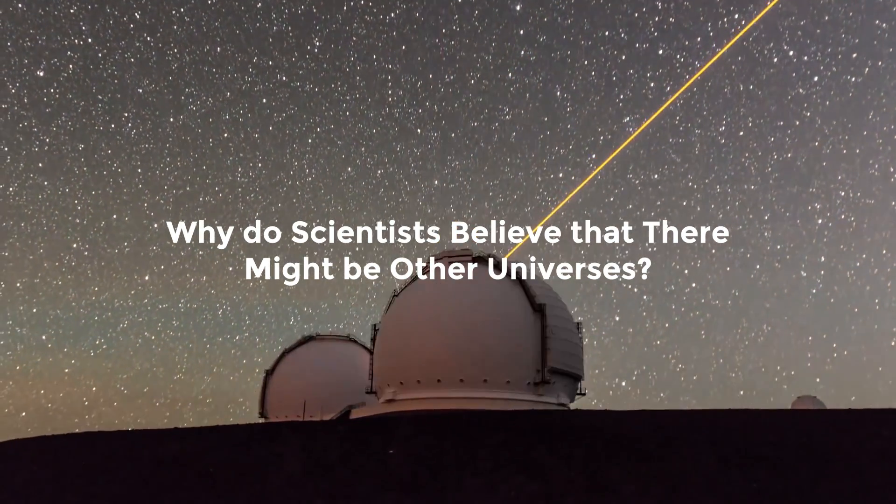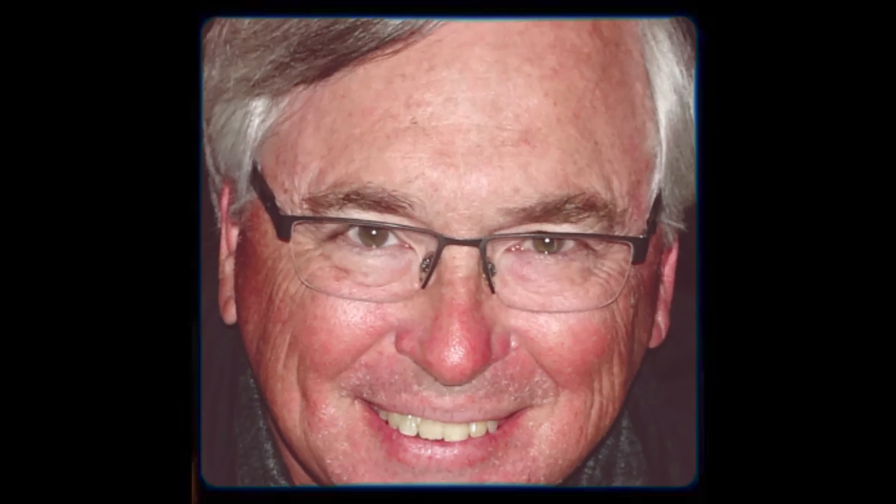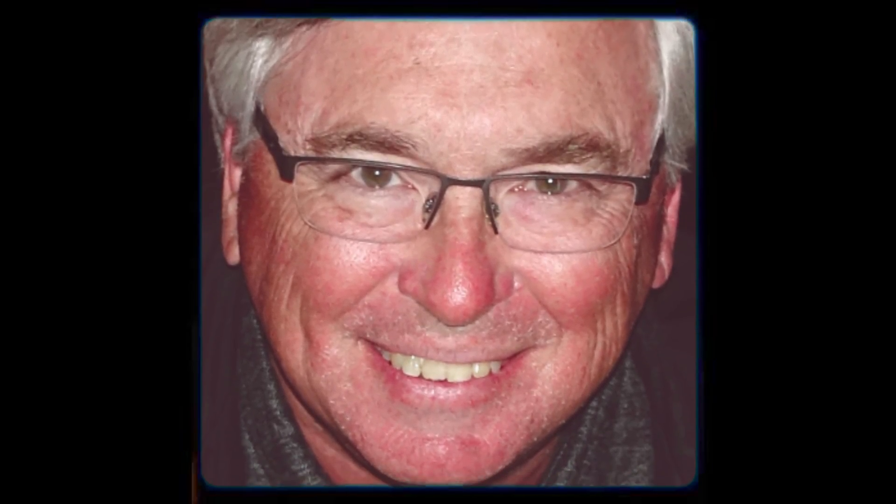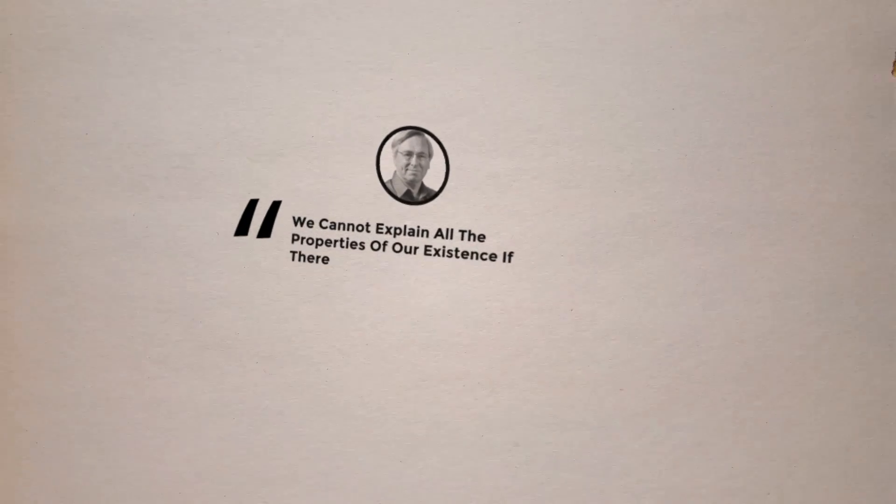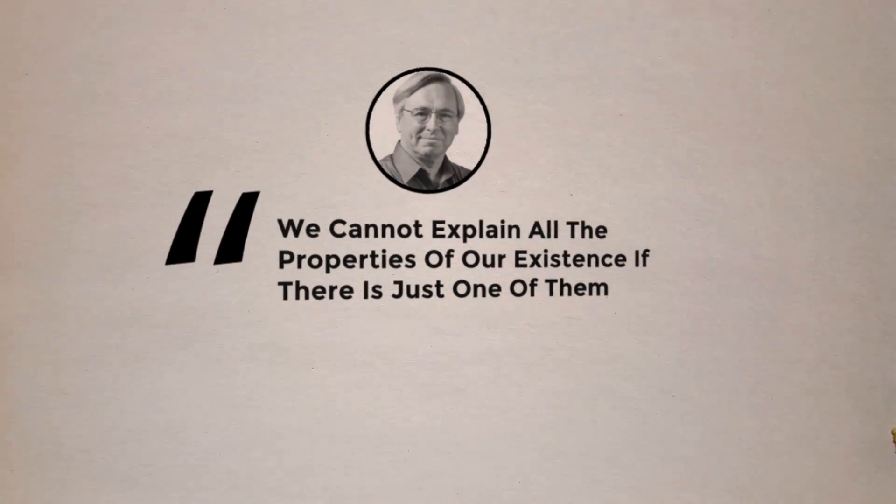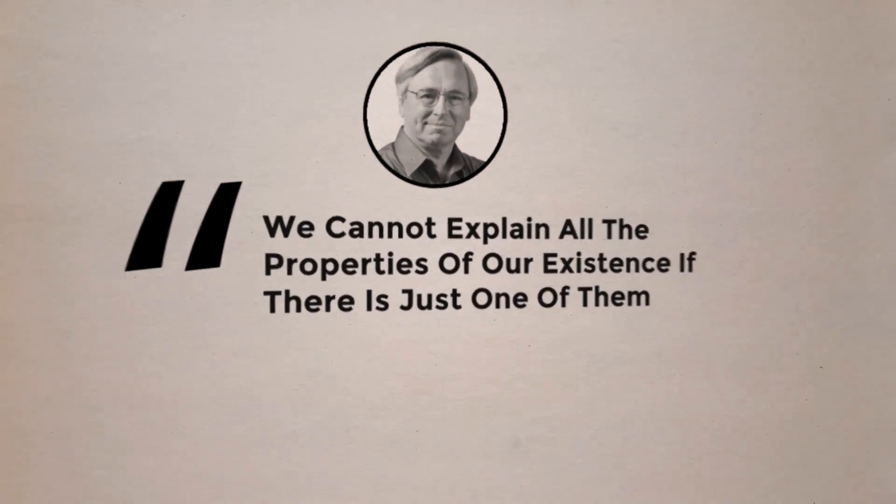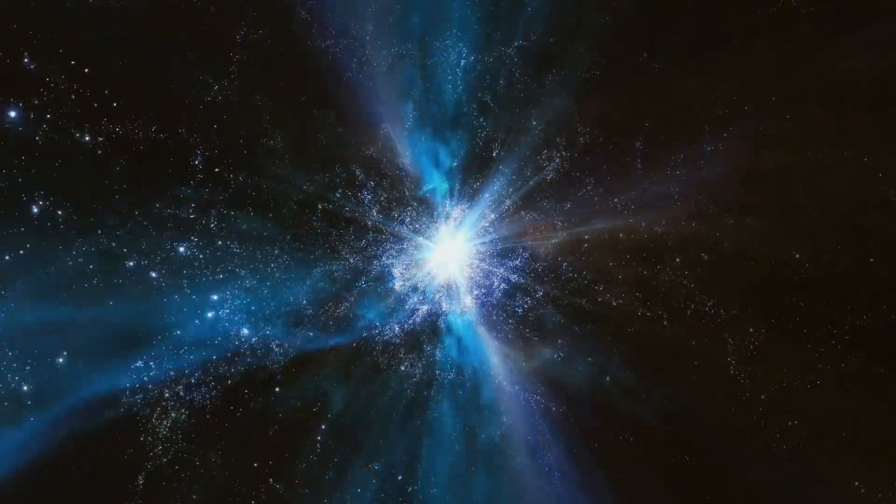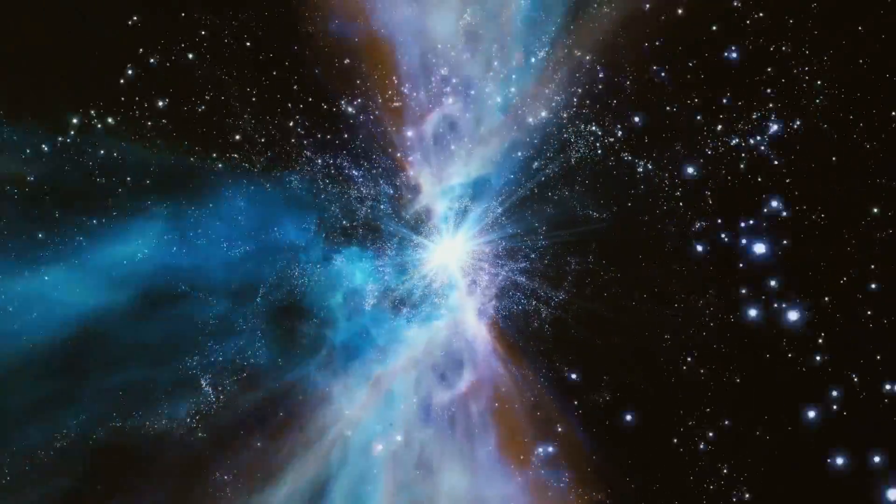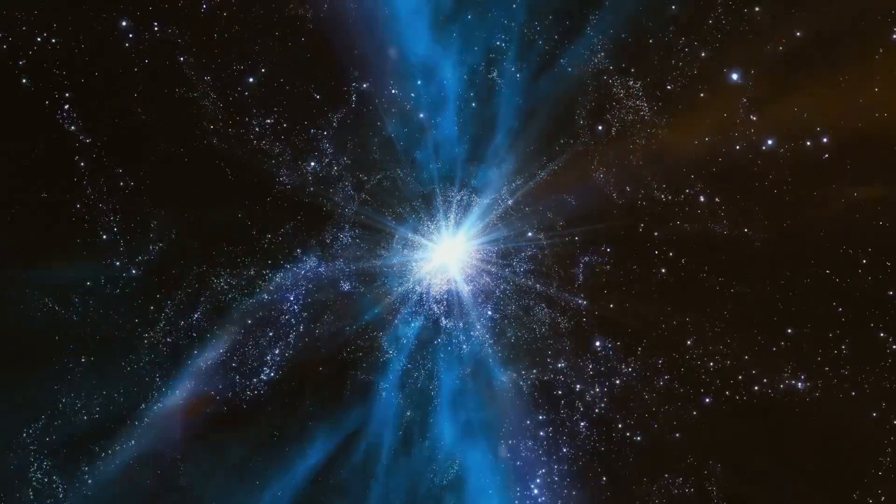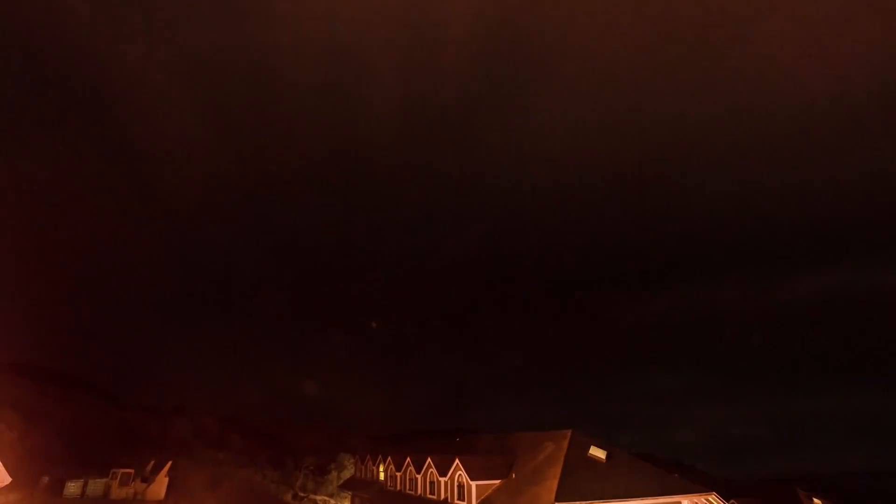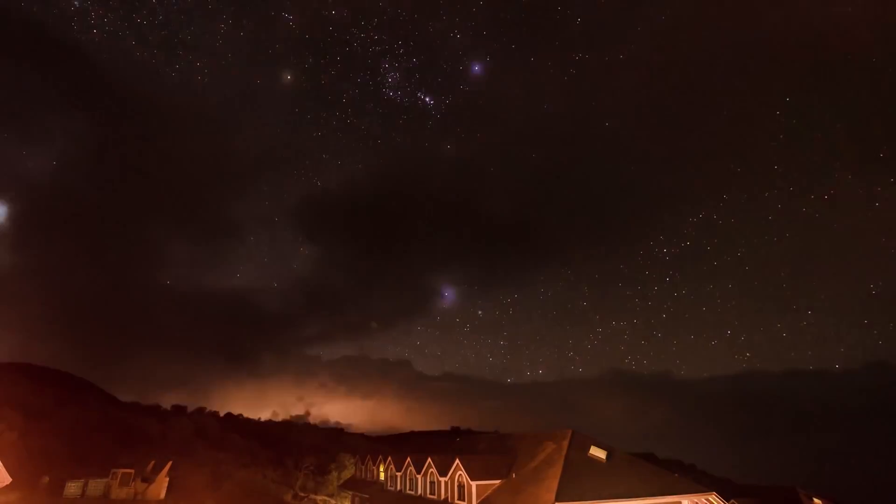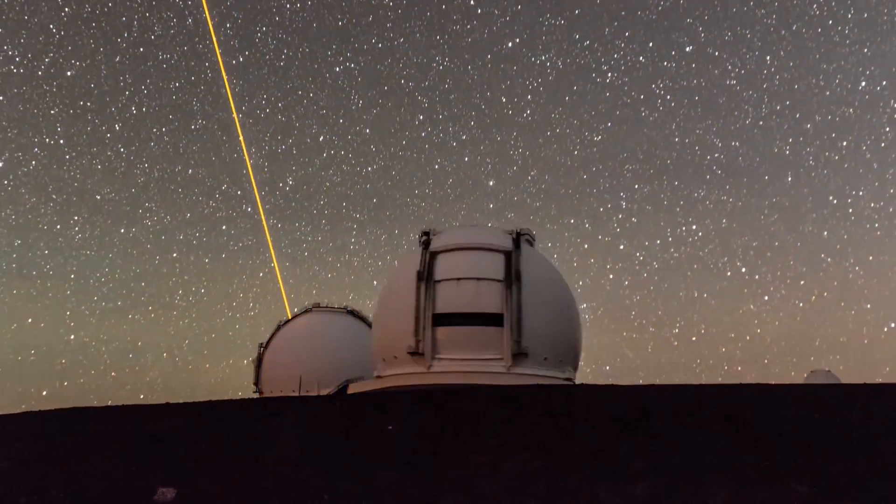Why do scientists believe that there might be other universes? According to science writer Tom Siegfried, whose book, The Number of Heavens, explores how theories of the multiverse have changed throughout the centuries, we cannot explain all the properties of our existence if there is just one of them. Why do the basic constraints of nature exist as they do? Why did our universe have enough time to create stars and planets? Why do stars have the perfect amount of energy when they shine? We don't have the answers for any of those issues in our physical theories.